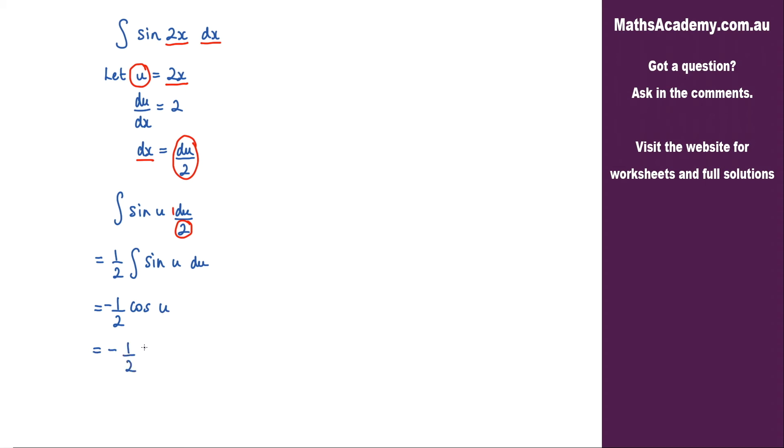So negative half cosine. Well we know that u is actually 2x, substitute that back in, and then just add on the constant of integration.